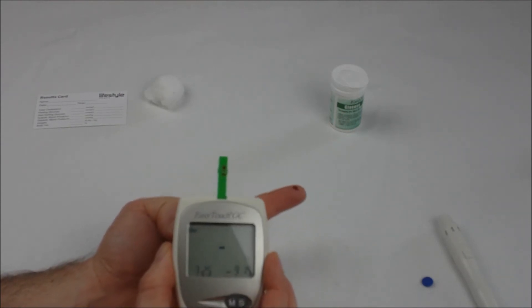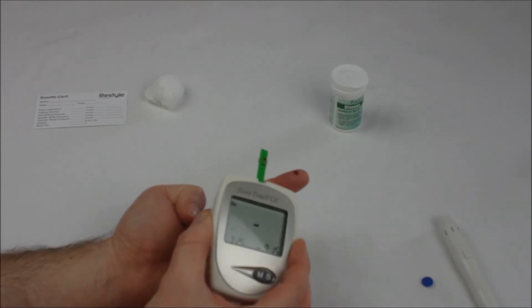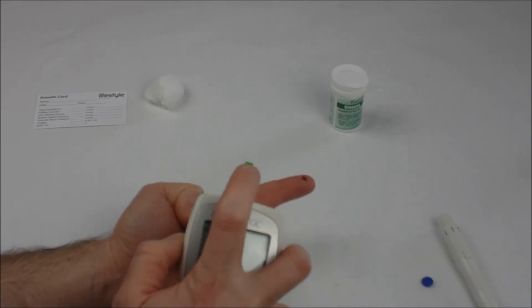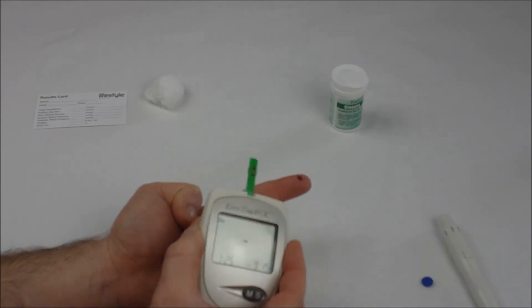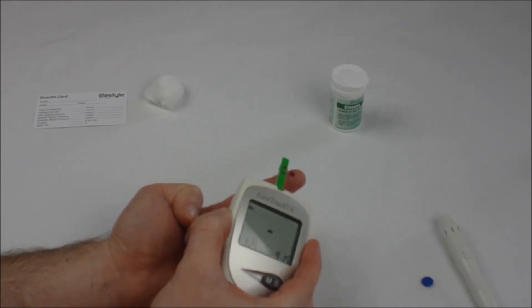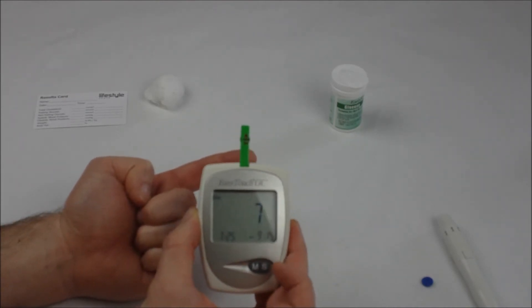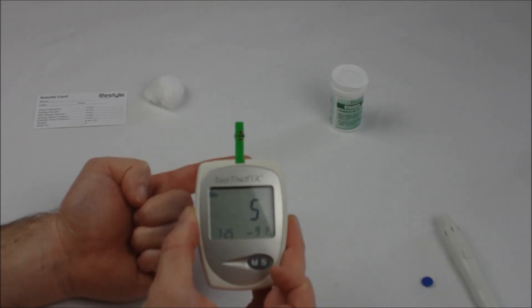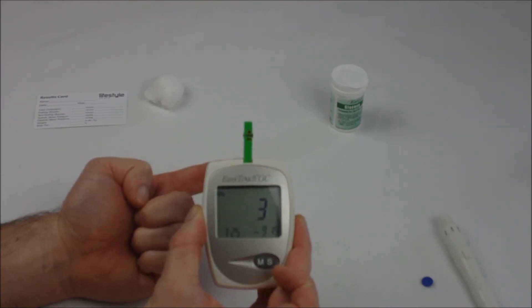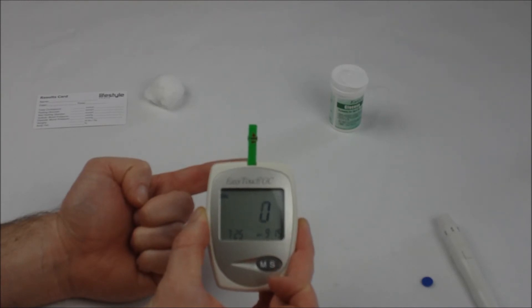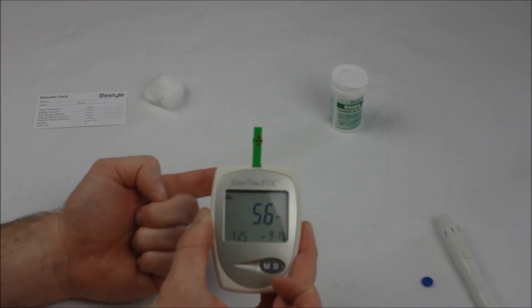Take your monitor and on the side of the test strip, not on the surface but on the side where the arrow is, you're just going to allow the blood to soak along the test strip area. As soon as it's soaked up enough, you'll see it count down from 10 and you should shortly receive a glucose measurement.